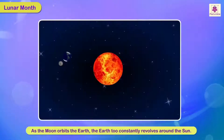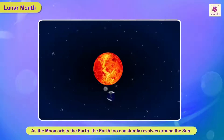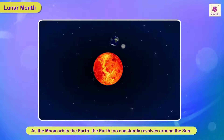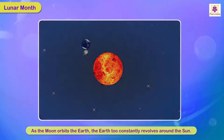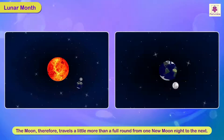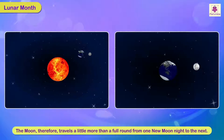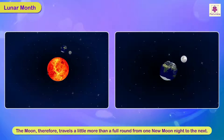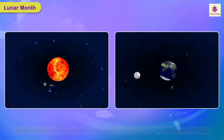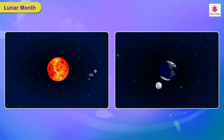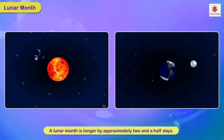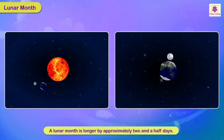As the Moon orbits the Earth, the Earth too constantly revolves around the Sun. The Moon therefore travels a little more than a full round from one new moon night to the next. This is the reason why a Lunar Month is longer by approximately two and a half days.